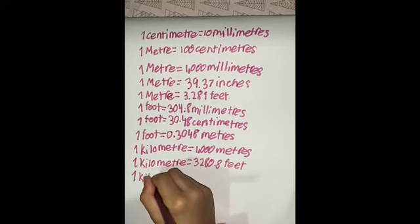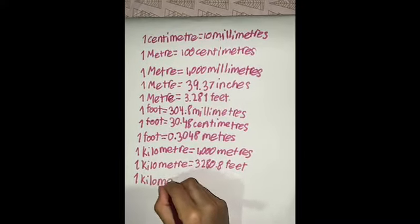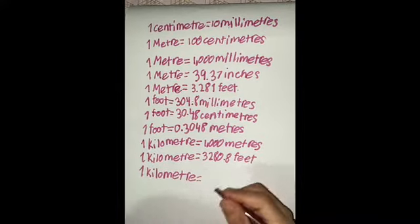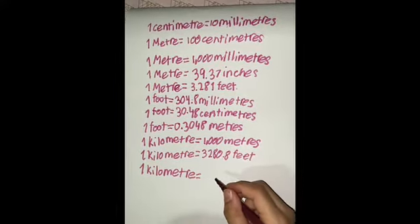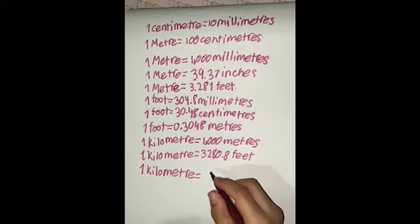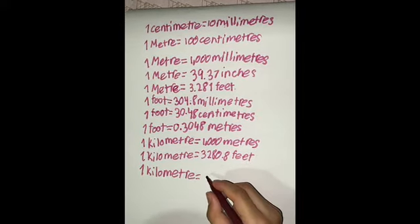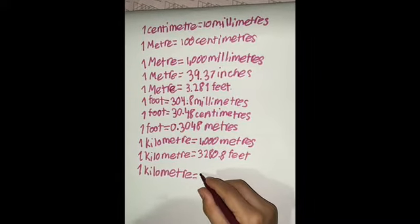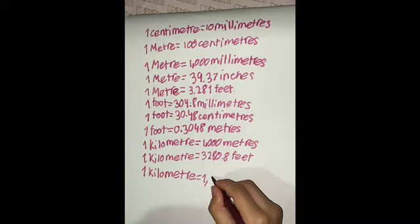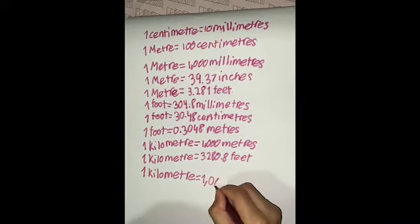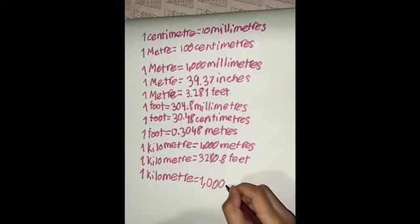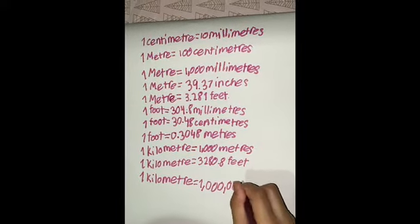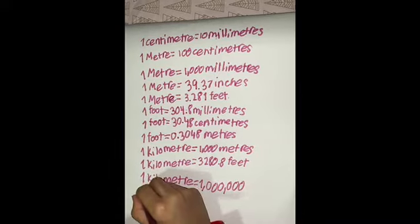One kilometer equals, this is a number that you may have heard but you don't know how to write, it's called one thousand. To write one thousand you need the number one comma zero zero zero comma zero zero zero millimeters.